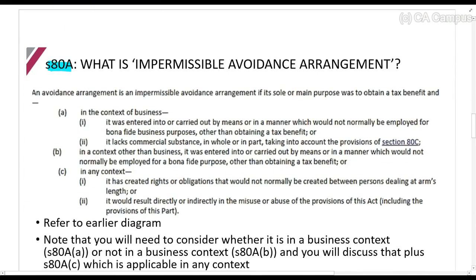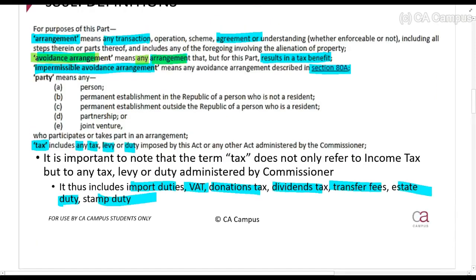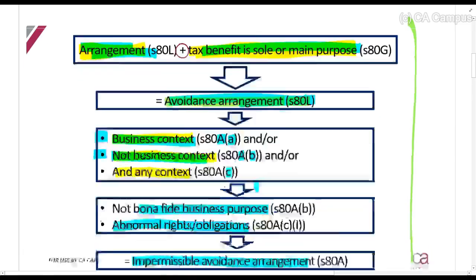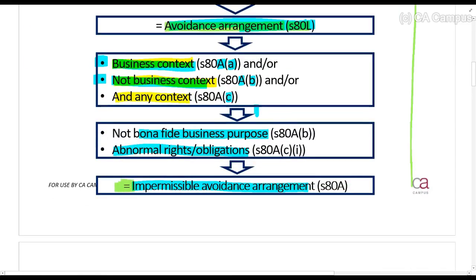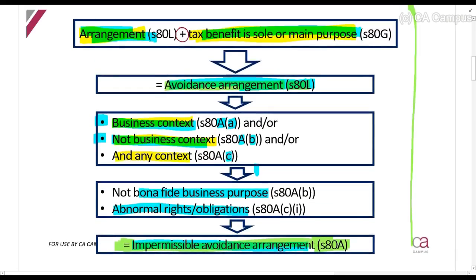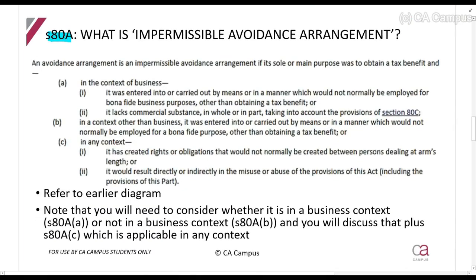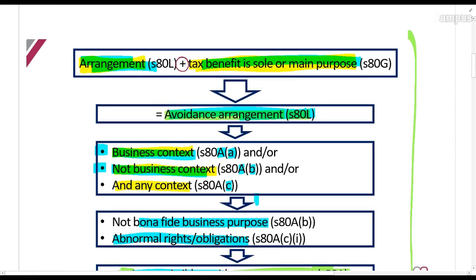Section 80A is the section that tells us what an impermissible avoidance arrangement is. An avoidance arrangement is an impermissible avoidance arrangement if... so first: an avoidance arrangement is an arrangement where you save tax.